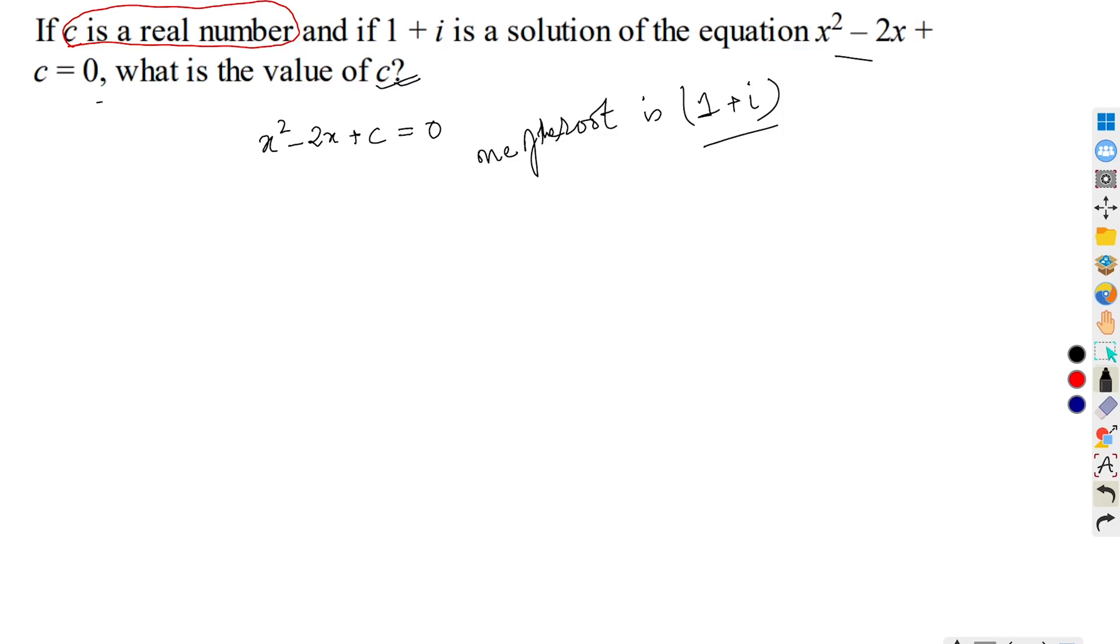We know that in a quadratic equation, if the coefficients are all real, then the complex roots will occur with its conjugate. That is, if one of the root is 1 plus i, since all the coefficients are real, therefore another root will be its conjugate, that is 1 minus i.